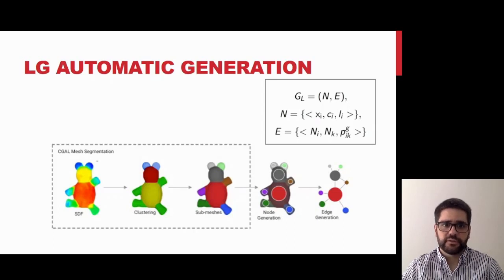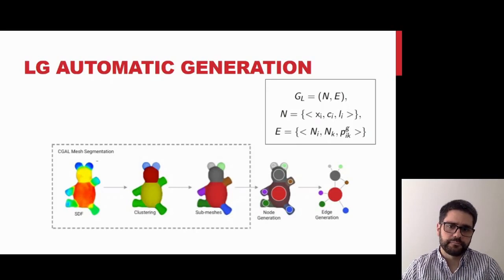For the automatic case, we propose the following algorithm. First, the Segal mesh segmentation is used to extract different submeshes. This method first computes the shape-diameter function descriptor, or SDF, for each mesh vertex. Then it applies a clustering algorithm to identify regions with similar SDF values. Finally, it performs a graph-cut-based algorithm to separate the independent submeshes.